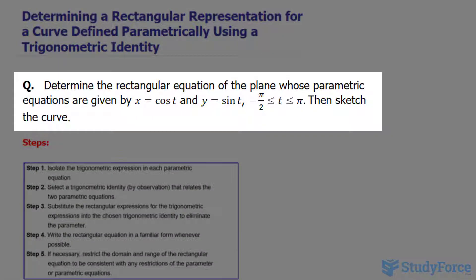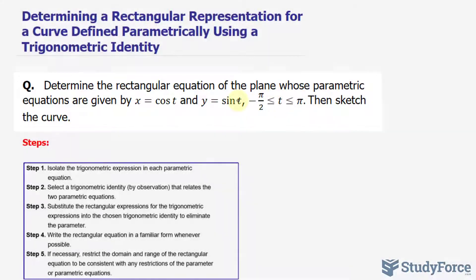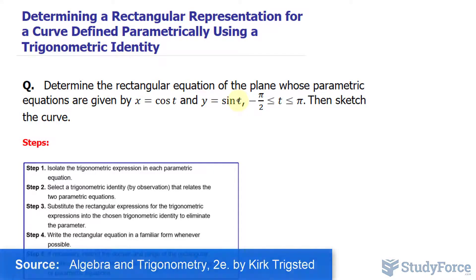The question reads: determine the rectangular equation of the plane whose parametric equations are given by x = cos t and y = sin t, and this is the range that they want us to graph it. The steps of doing this are outlined below and we'll be following these steps as we do the question.